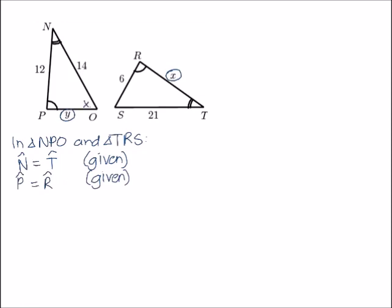the size of angle O, if I was to calculate it, and the size of angle S, I would get exactly the same answer, because it would be 180 degrees minus N minus P, and N and T are the same, and P and R are the same. So it follows that angle O is equal to angle S, because they are the third angle in a triangle.